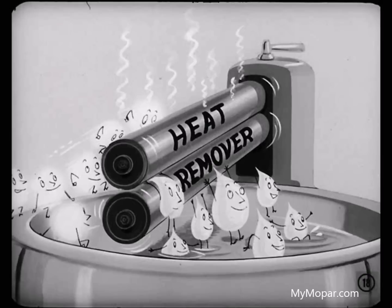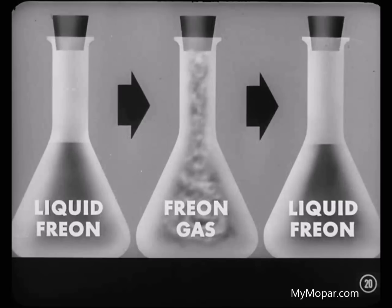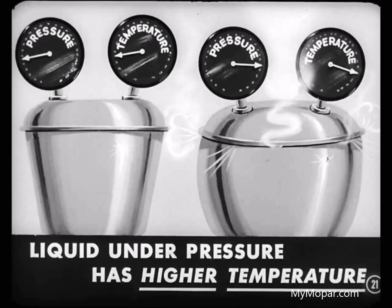But why compress it at all if it's colder as a gas? Well, that's a good question, Bill. When it's a gas, it has absorbed some heat, and we have to take that heat out so we can use the Freon over again to absorb more heat. So we put it under pressure and then remove the heat, which changes it back to a liquid. Then we can use the Freon again. By being able to change Freon from a liquid to a gas and back to a liquid, we can control the point at which it evaporates, and that's the point at which it absorbs the most heat. Remember: when you put a liquid under pressure, you raise the temperature at which it will turn to a gas.